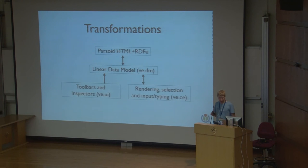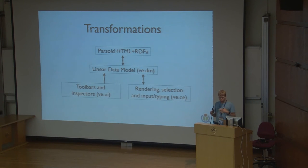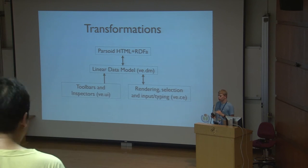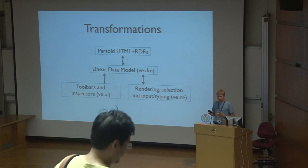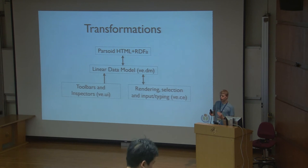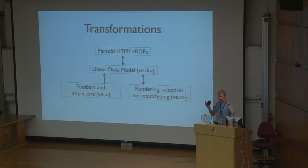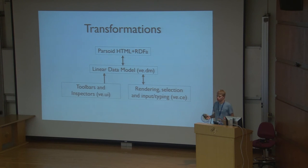As a diagram, we have Parsoid from which we receive HTML. That is turned into the linear model and data model. The data model interacts in two directions with the rendering layer. We take the data model and render it in content editable, but we also let you type there and change things, which goes back into the data model. The various toolbar buttons and all that stuff is in the VE UI layer for user interface, and that also goes and changes the data model.